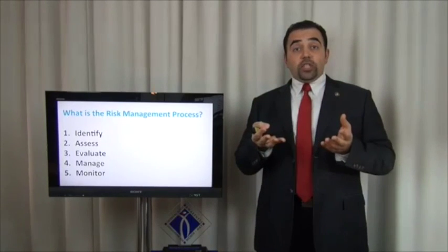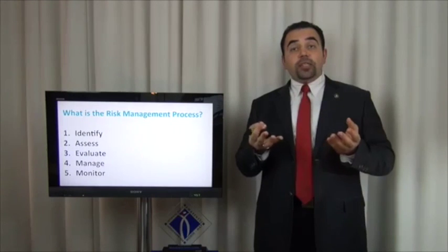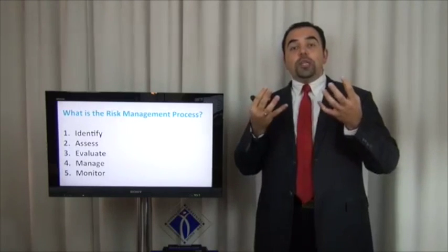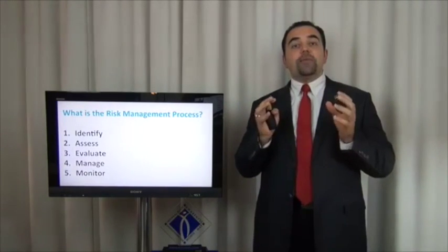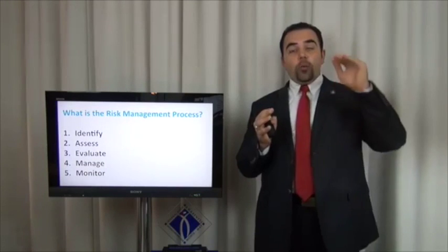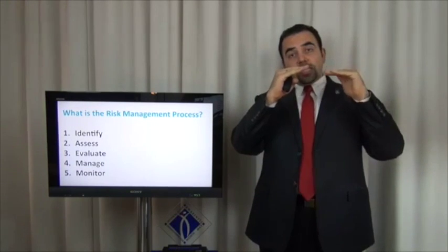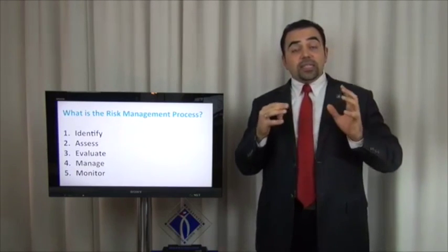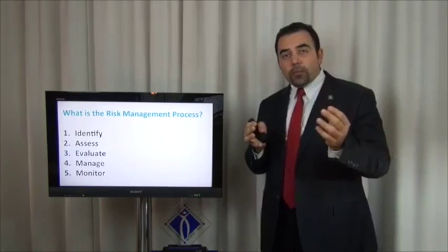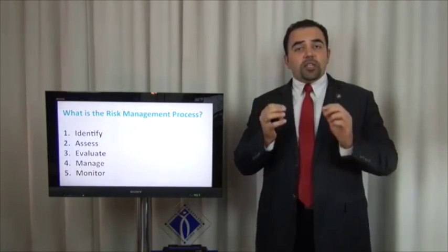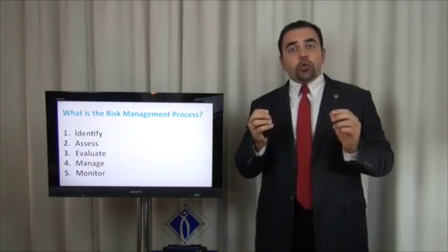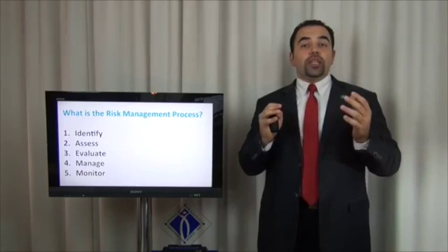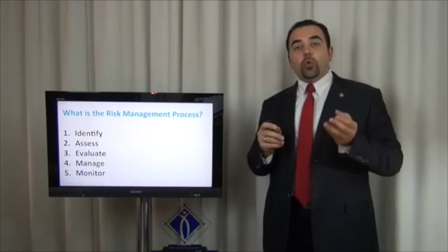Third, we evaluate the risk by understanding what the organization has in place to reduce it — determining whether risk has been reduced to an acceptable level through existing controls. If the risk is still medium or high, we move to step four: we manage the risk by implementing risk management processes and internal controls to reduce it to an acceptable level. Step five is monitoring — continuously ensuring the risk remains controlled and below the acceptable level.